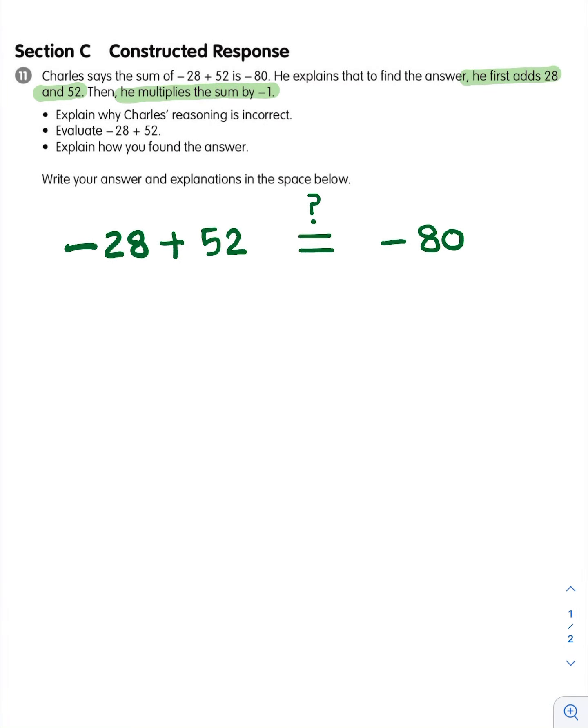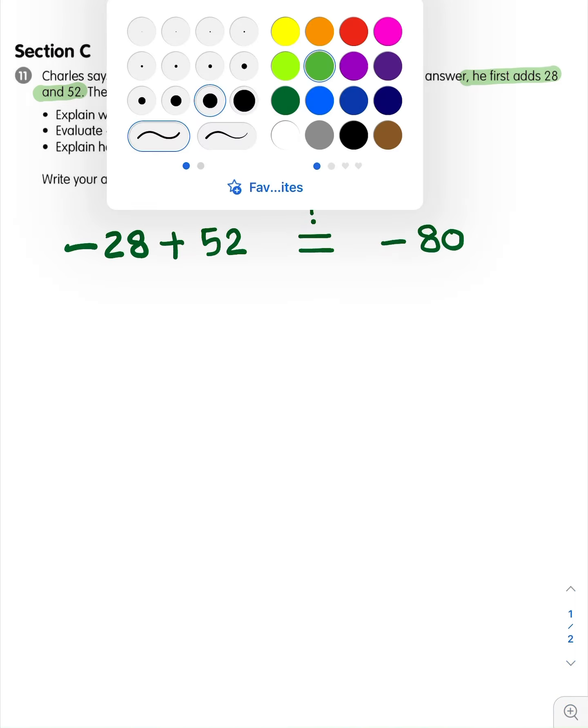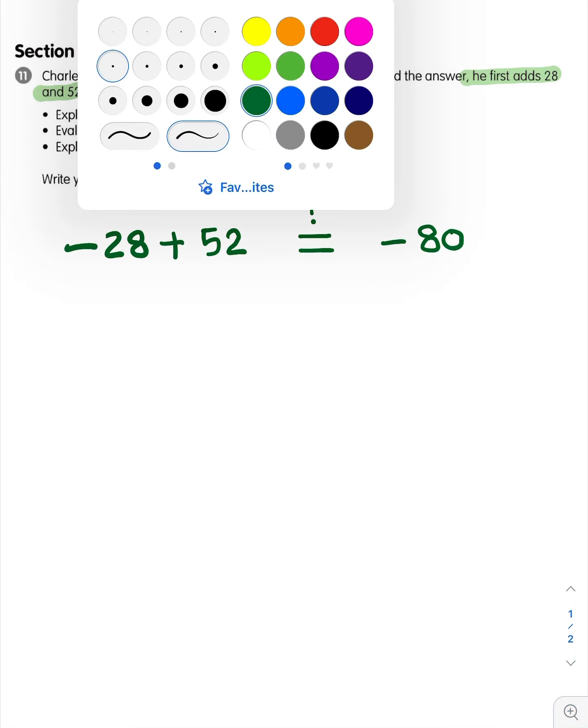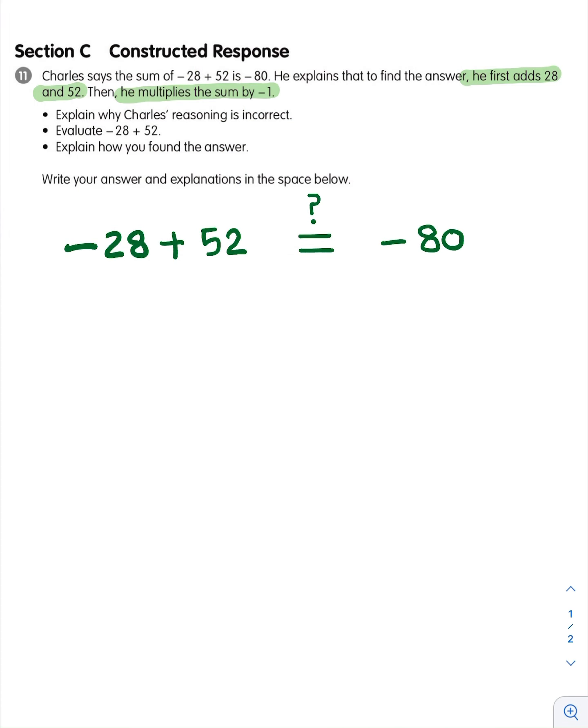Okay, so let's see. Explain, first of all, why Charles's reasoning is incorrect. First of all, is Charles correct or incorrect? Negative 28 plus 52. So what do we have? We have a negative integer. We have a positive integer, and we are adding them. So this is plus 52.